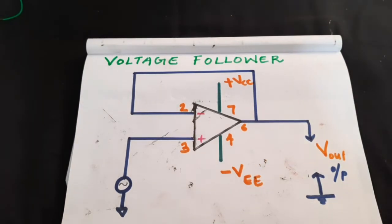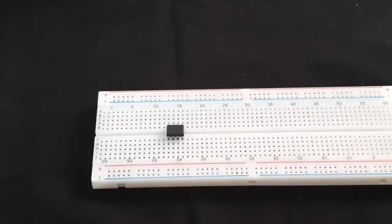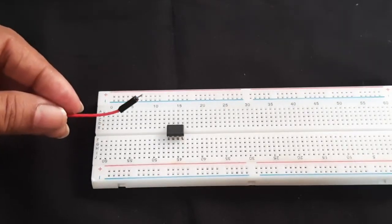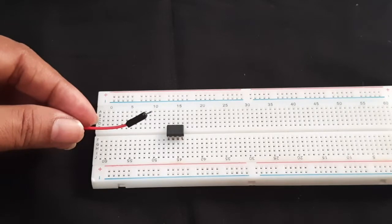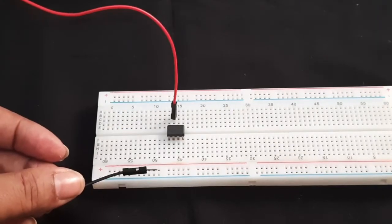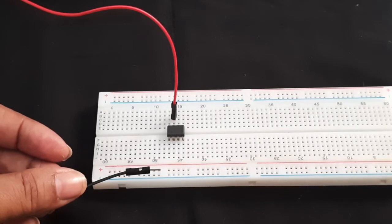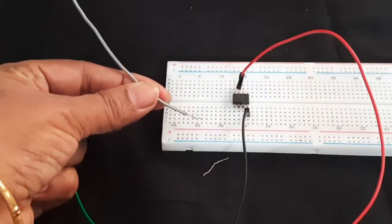Coming to the circuit, all you need is the IC741. We will give the biasing supplies first. Our red wire of plus VCC to pin 7. Our black wire of minus VCC to pin 4. Ground wire from the biasing supply to the ground line.